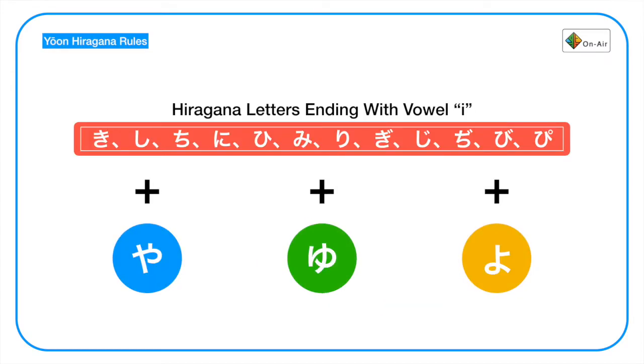How do we make the combinations or the combo hiragana letters? It's just by combining all the hiragana letters ending with the vowel i with the ya, yu, yo. We have the combo hiraganas.